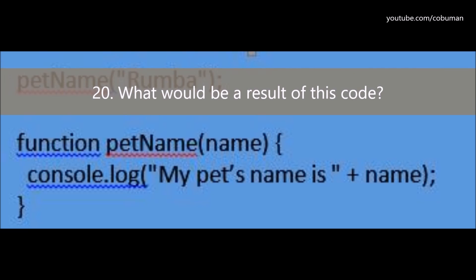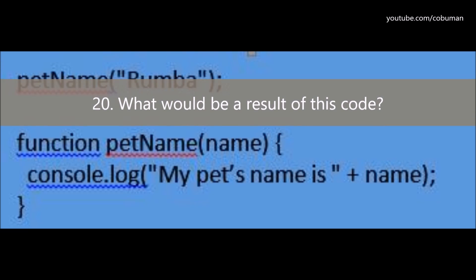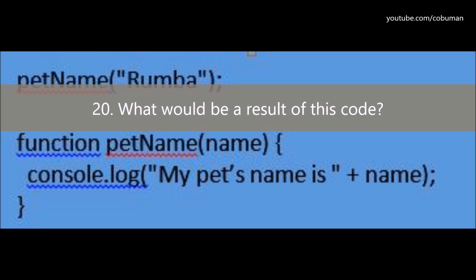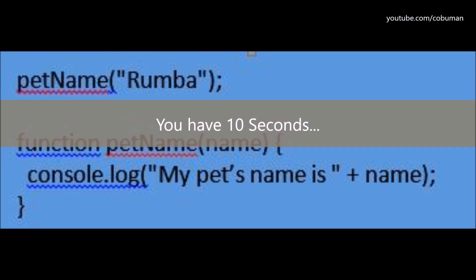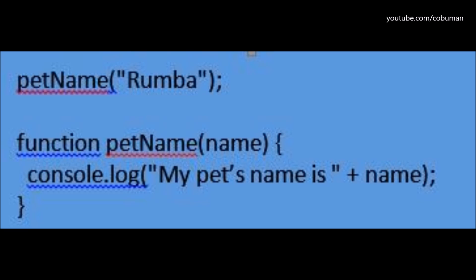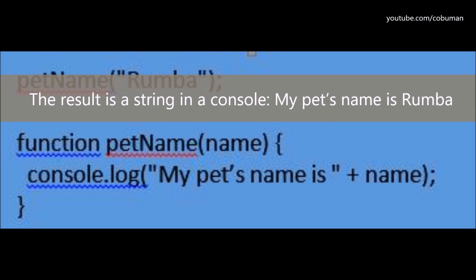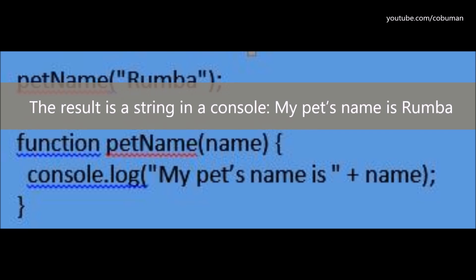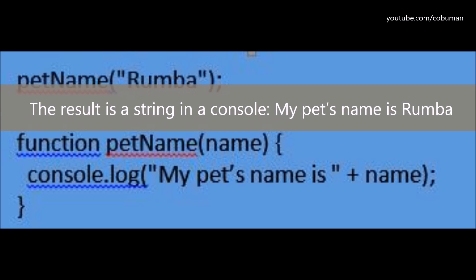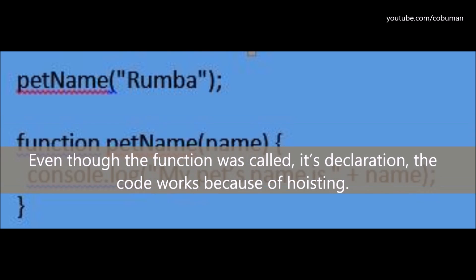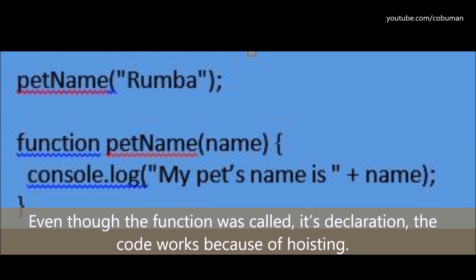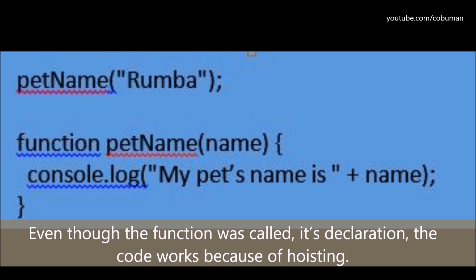Question number twenty: What would be the result of this code? The result is a string in the console: 'My pet's name is Roomba.' Even though the function was called before its declaration, the code works because of hoisting.